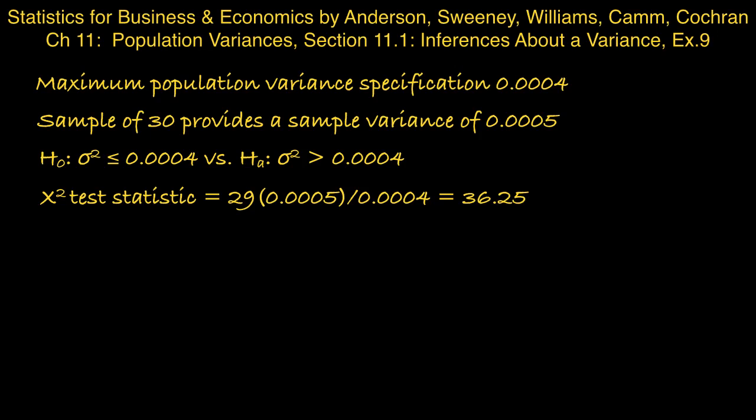Next we want to find out the p-value corresponding to this test statistic, which since this is an upper tail test would be the tail area to the right of 36.25. If we consult a chi-squared table and look at the row corresponding to 29 degrees of freedom, we find that the 90th percentile, which has a tail area of 0.10 in its upper tail, is 39.087.